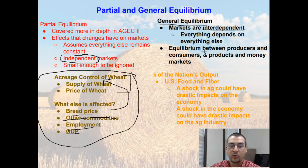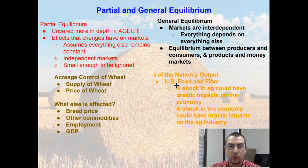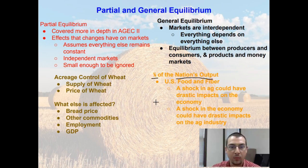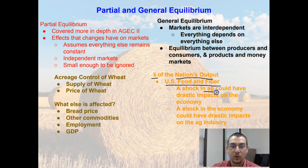With general equilibrium, we're now looking at the equilibrium between producers and consumers, but also the equilibrium between product and money markets. We're going to focus more on general equilibrium in macroeconomics, which is the focus of this course. One-fifth — so 20% — of the nation's output of products and services is tied to the U.S. food and fiber industry. A shock in the agricultural industry could therefore have drastic impacts on the whole economy, not just on the agricultural industry.